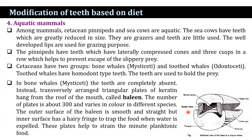Cetaceans have two groups: the baleen whales, Mysticeti, and the toothed whales, Odontoceti. Toothed whales have homodont teeth used to hold prey. In baleen whales, teeth are completely absent. Instead, transversely arranged triangular plates of keratin hang from the roof of the mouth — these are called baleen. The number of plates is about 300 and varies in color in different species. The outer surface of the baleen is smooth and straight, but the inner surface has a hairy fringe to trap food when water is expelled. These plates help strain minute planktonic food.